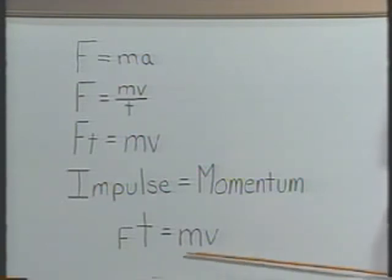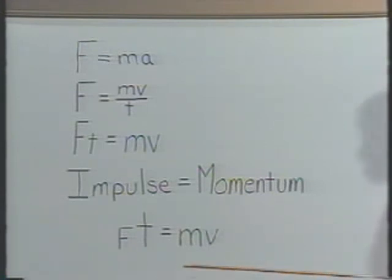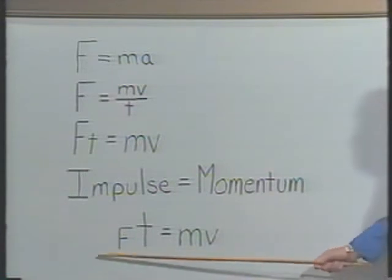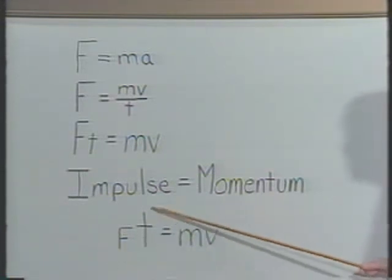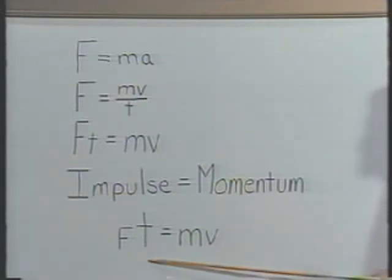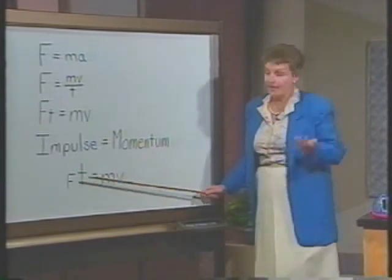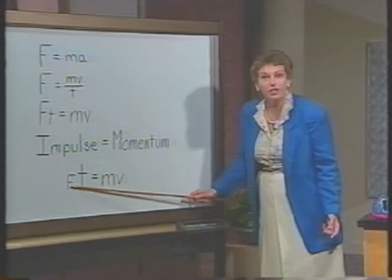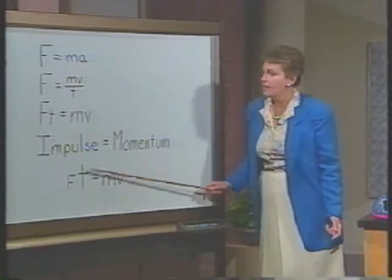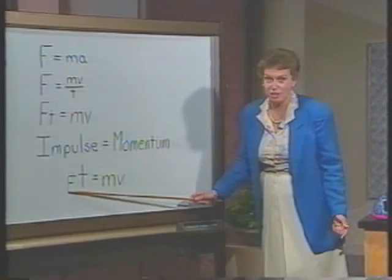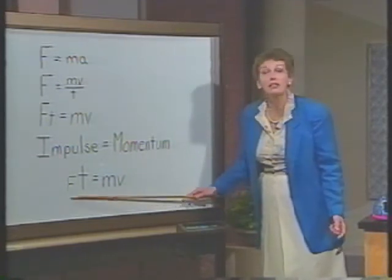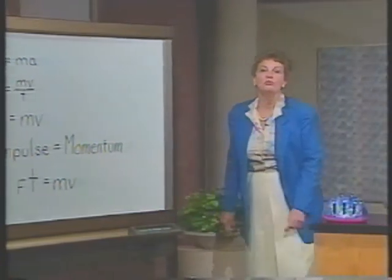That momentum of the egg, when it hits the sheet, is not lost — rather, it is transferred into the sheet. Look what happens to your force if you take the time and enlarge it. That's the secret to why the sheet will not break the egg: the sheet gives, and in giving, the sheet causes the time of this momentum transfer to be quite large. If you increase the time, the force has to get smaller. Because momentum is conserved, this number would not change. The secret, then, to a lot of impacts and prevention of impacts is in the time that the collision takes place.